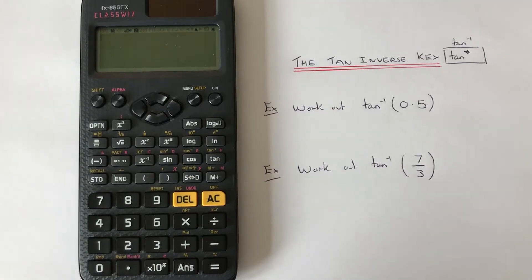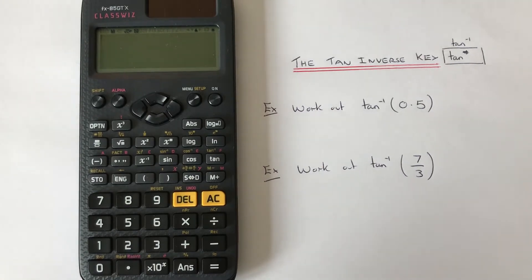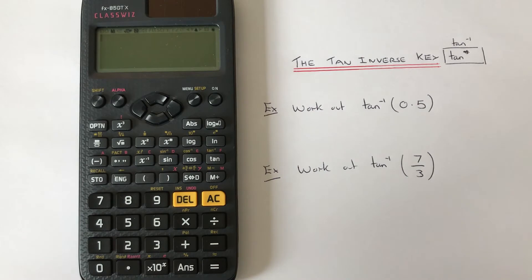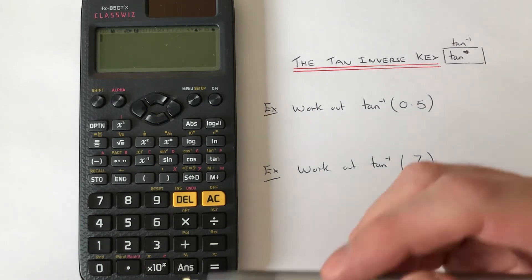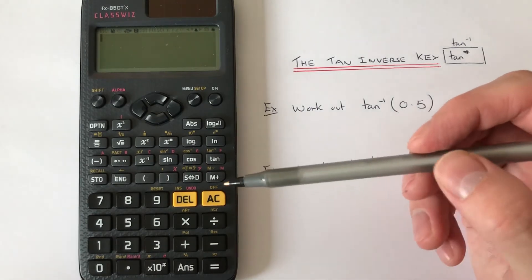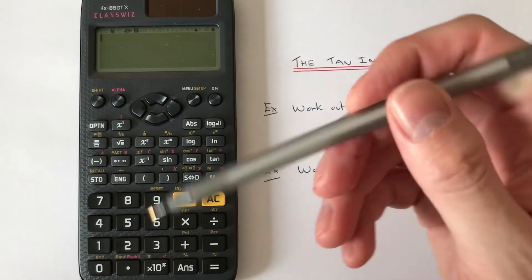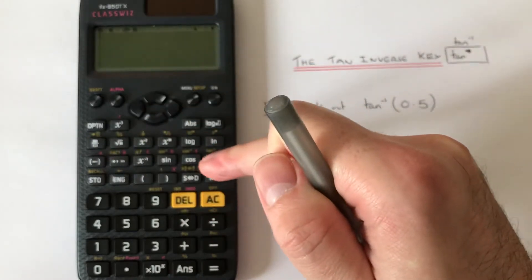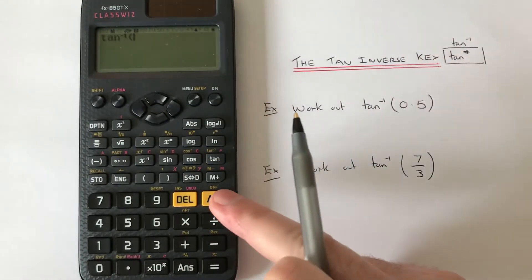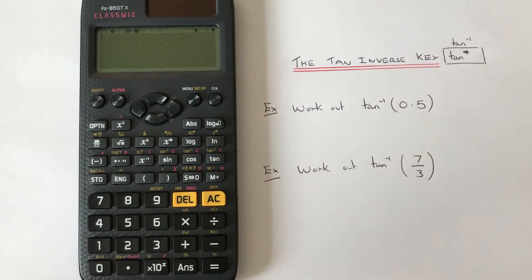Hi guys, welcome back. This is Maths 3000. Today I'm going to show you how to find tan inverse of a number on a Casio Classwiz scientific calculator. The tan inverse key can be found on the second function of the tan key, so we press Shift then tan. Let's have a look at the two examples that we have here.